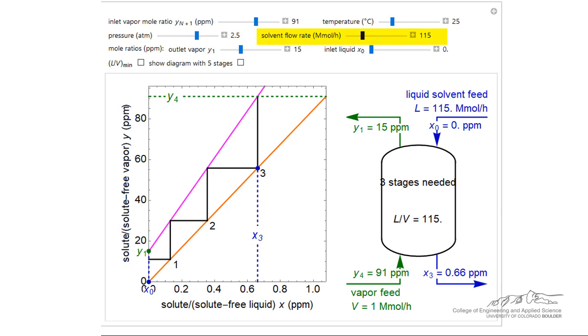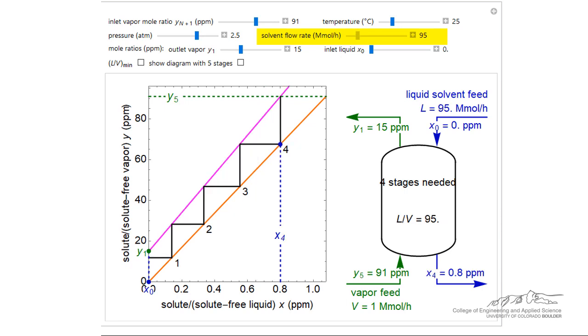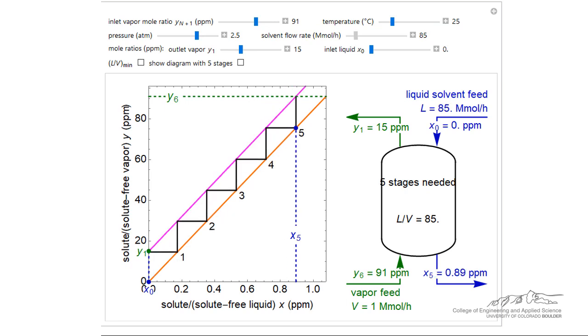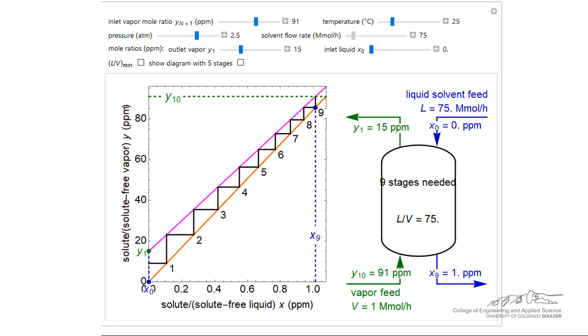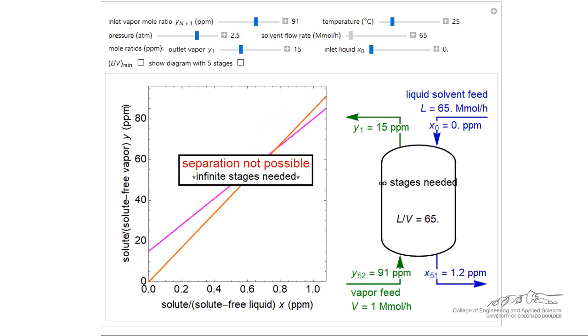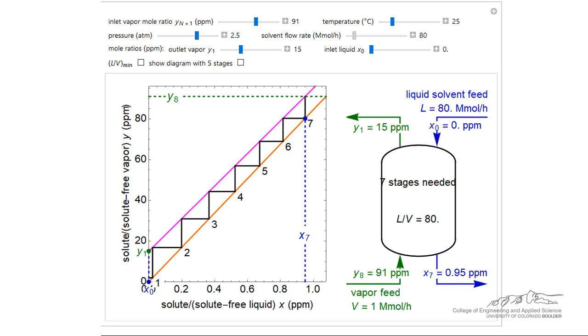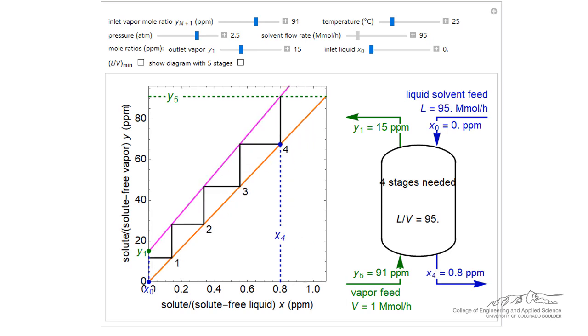The third parameter we will vary is the solvent flow rate. The initial L over V ratio was 115 to 1. As L is decreased, the operating line's slope decreases. Remember, the slope is equal to L over V and more stages are required. As L is increased, the slope of the operating line increases and fewer stages are required.